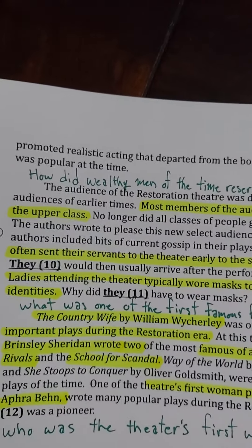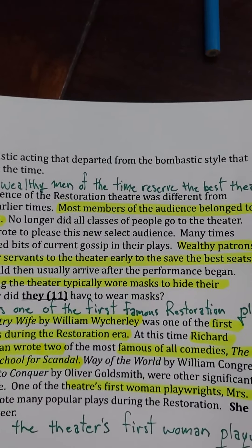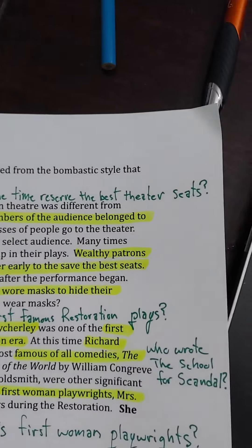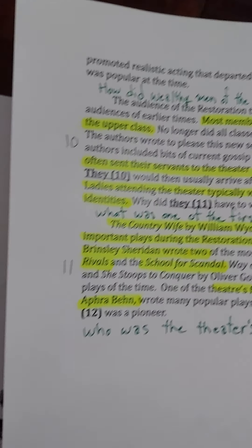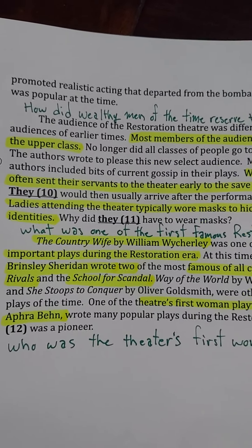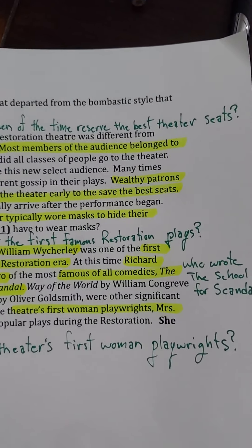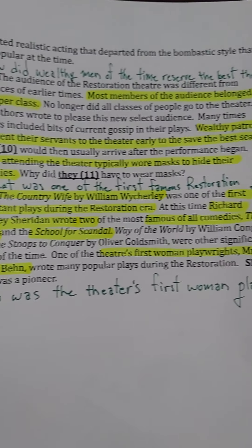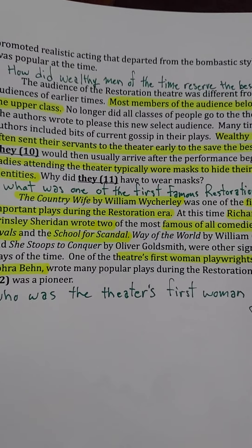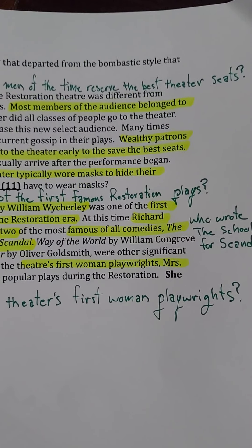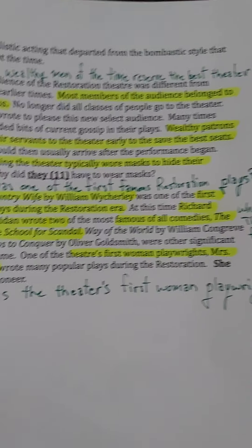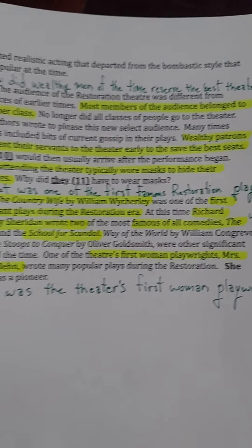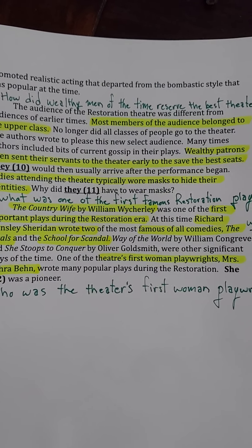Paragraph ten: how did wealthy men of the time reserve the best theater seats? Paragraph eleven: what was one of the first famous Restoration plays? Who wrote 'The School for Scandal'? Who was the theater's first woman playwright? There we have it.